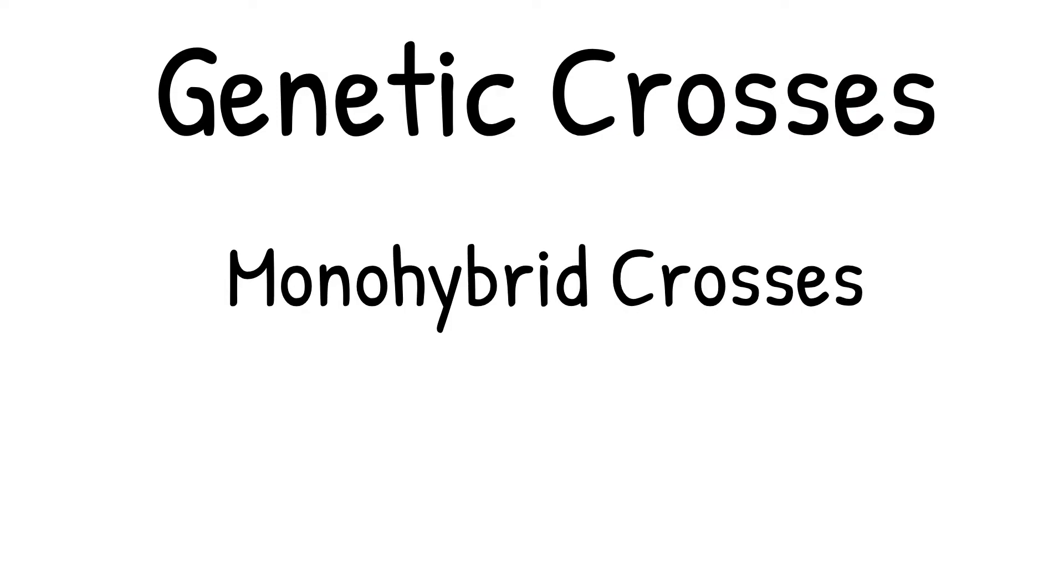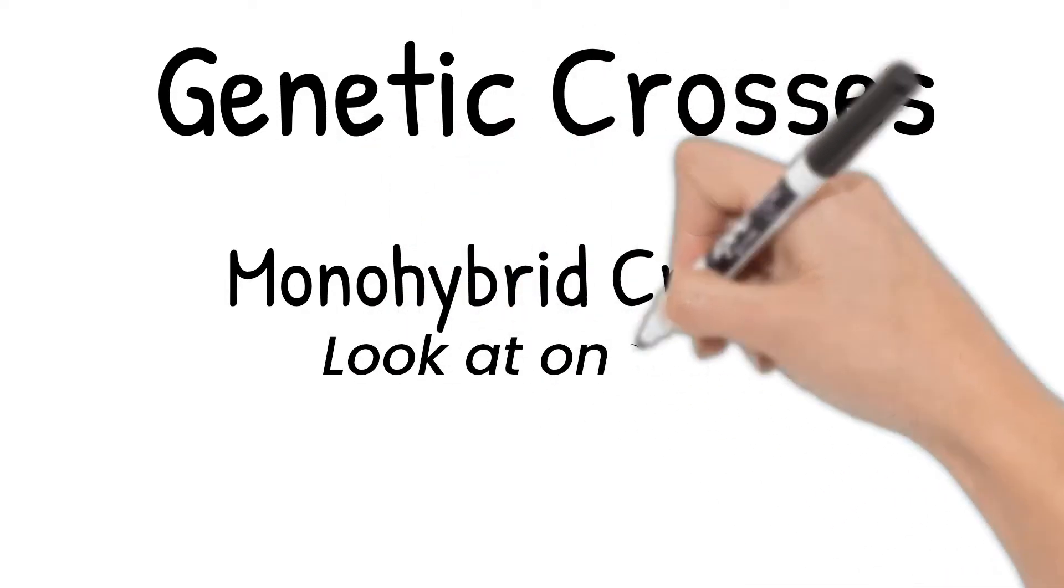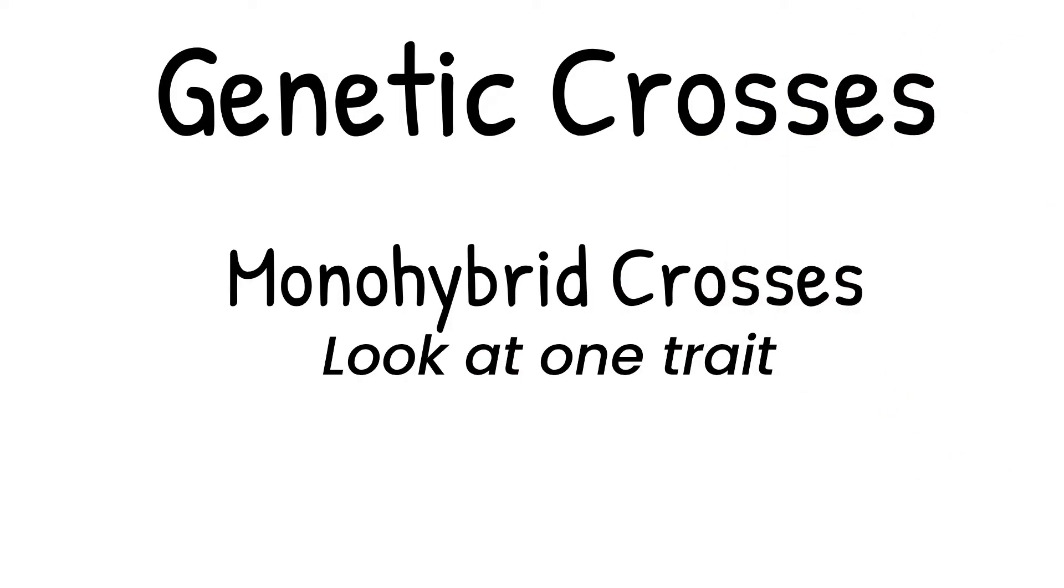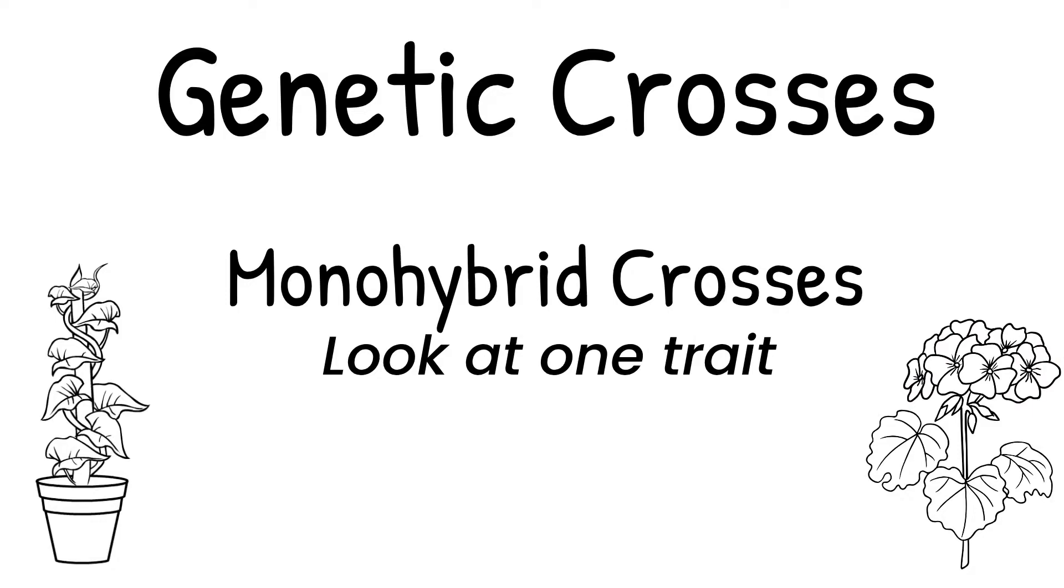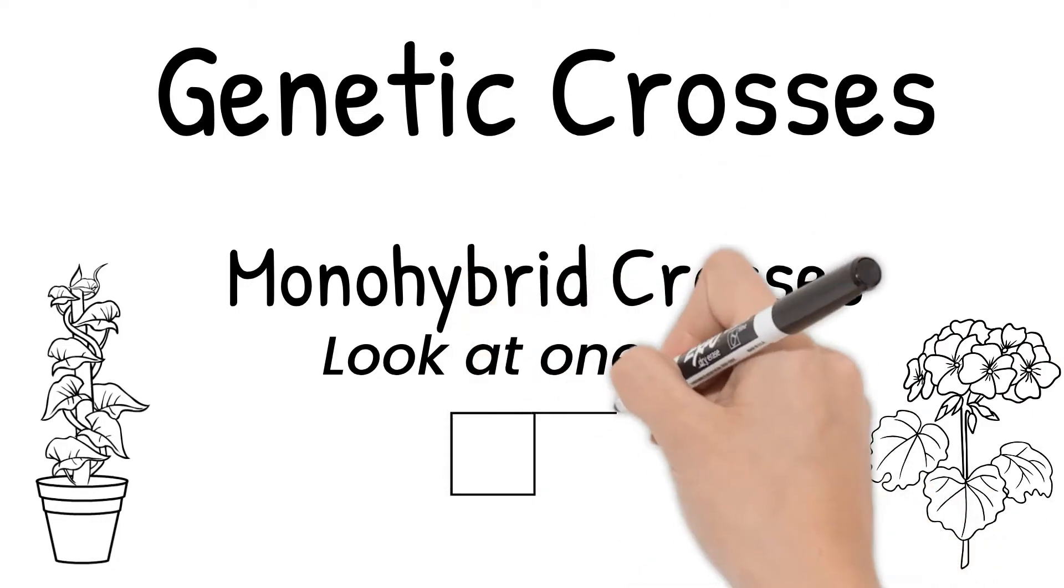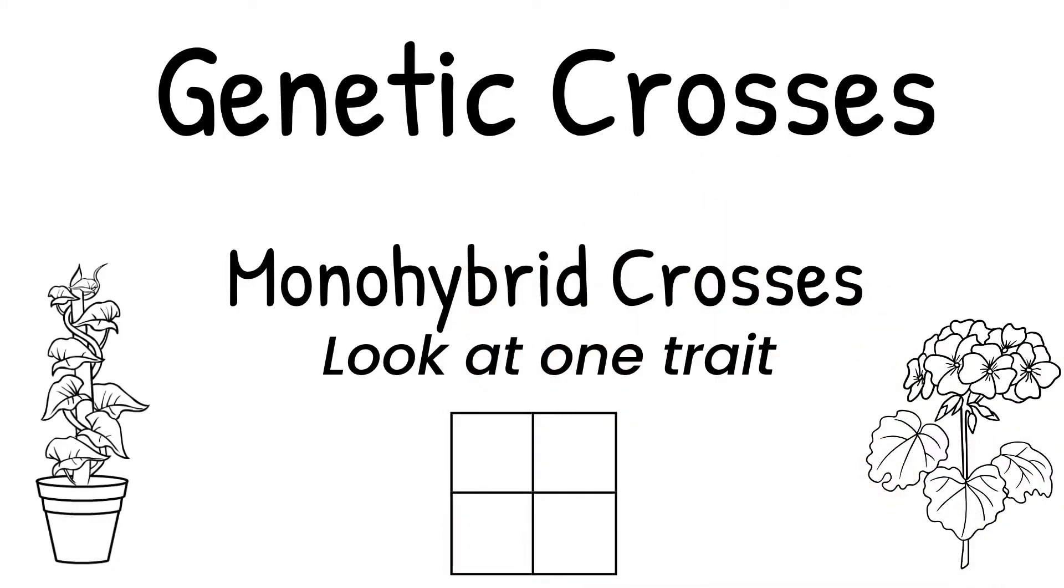Monohybrid crosses are genetic crosses looking at only one trait, such as plant height, flower color, and so on. We use a Punnett square to help us determine possible genotypes and phenotypes of alleles.